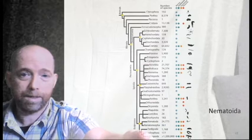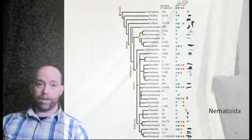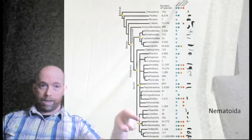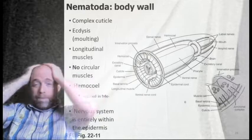That's the last of the spiralians — the nemerteans. Now we move down into the ecdysozoans to talk about nematodes and nematomorphs. The root prefix is the same Greek 'nema' for thread, but remember nematodes and nematomorphs are closely related to each other; nemertean worms are not — it's just describing their thread-like nature.